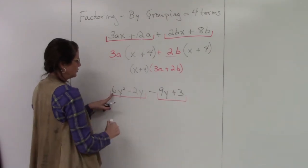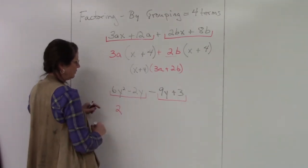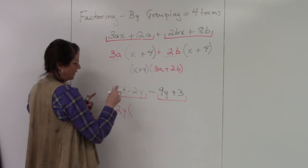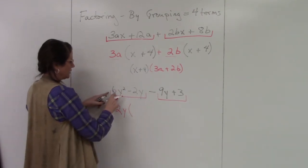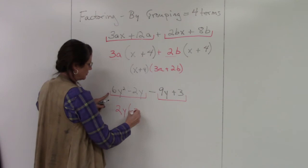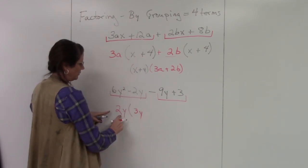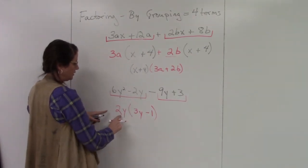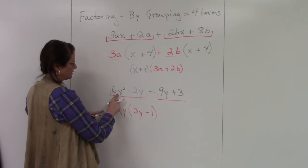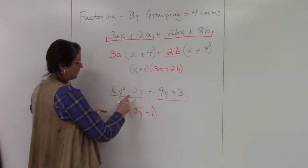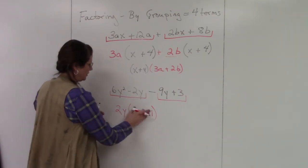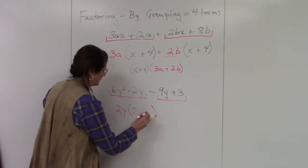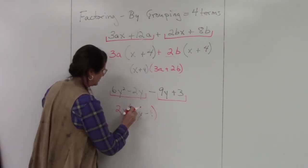6y² minus 2y. 6 and 2 have 2 in common. They both have y's in common. So remember, we're taking the lowest exponent on the variable. 6y² divided by 2y is 3y. 2y divided by 2y is 1. And notice I'm using the same sign. I can double check: 2y times 3y is 6y², and 2y times negative 1 gives me negative 2y.